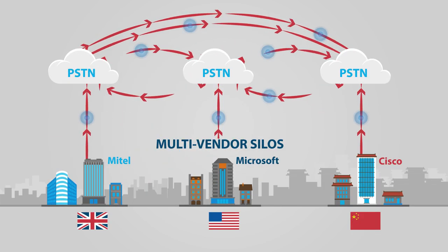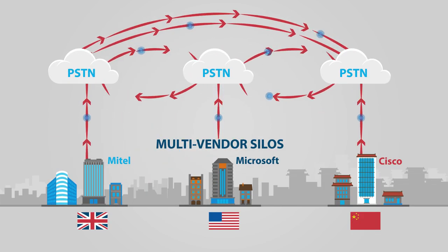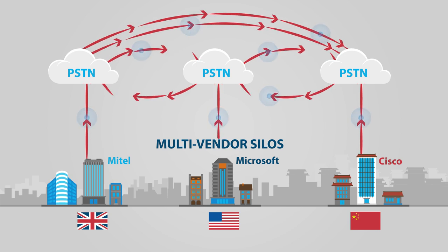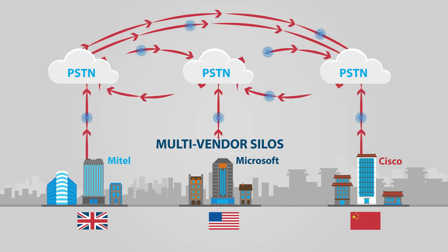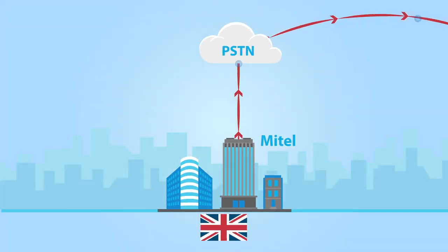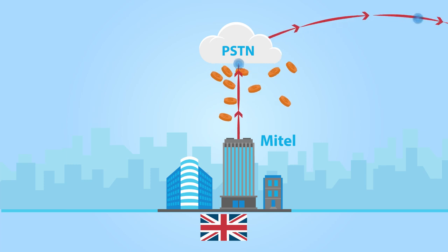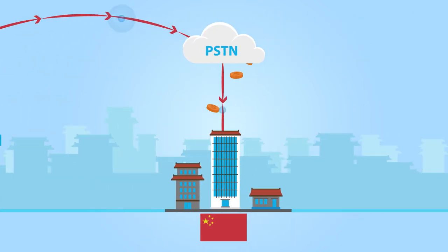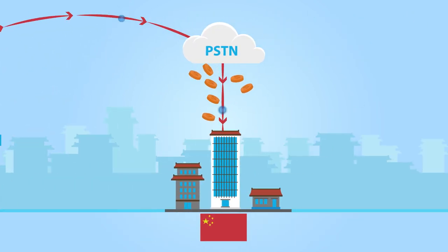Enterprise voice networks are often made up of multi-vendor communication silos, operated and managed separately from each other. This leads to high communications costs, with interbranch calls traveling over the PSTN and many local trunk connections.